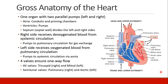Let's begin with a discussion of the gross anatomy of the heart. The heart is actually one organ that has two parallel pumps, a left side and a right side. Each side has an atrium, which is a conduit and a priming chamber, and a ventricle, which is the actual pump. The left and the right sides are divided by a septum, a septal wall.